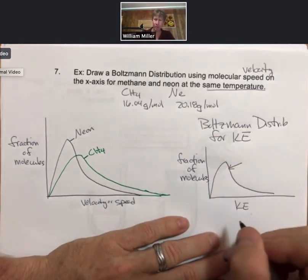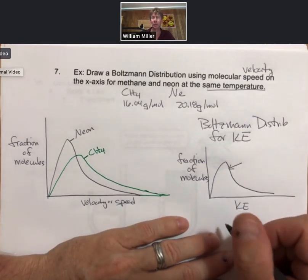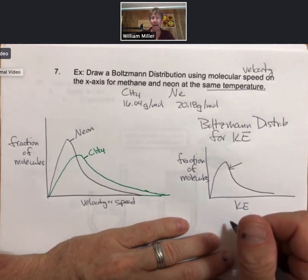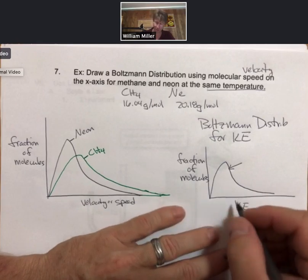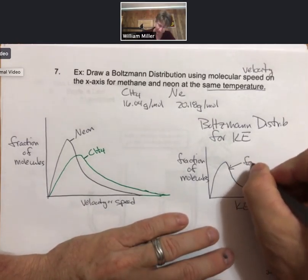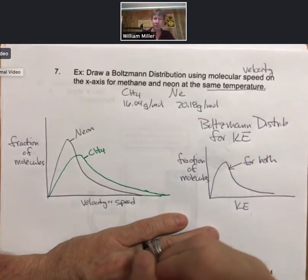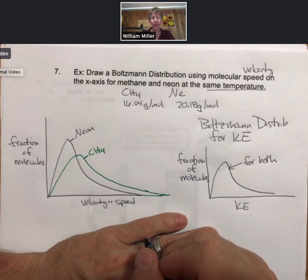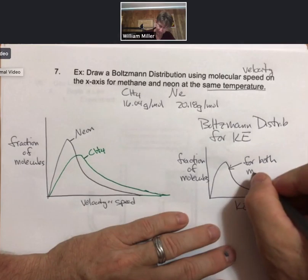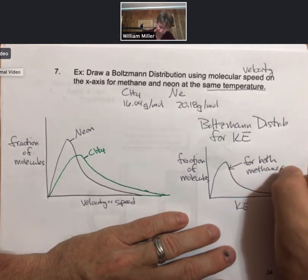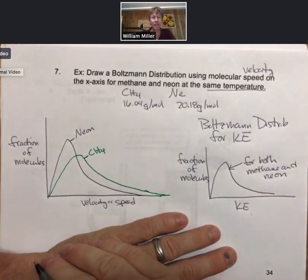So what we would just say is since they're at the same temperature, kinetic energy average and the overall distribution is the same for both methane and neon and any other gas. So don't accidentally draw two different curves for these two substances.